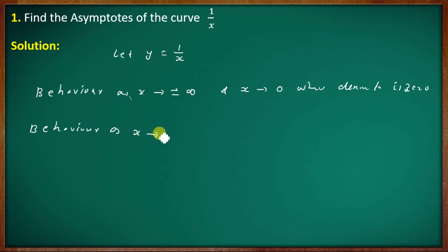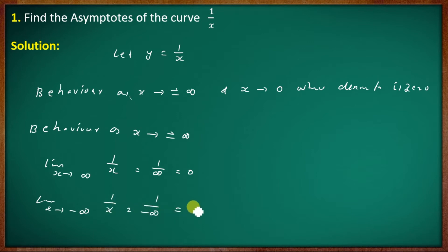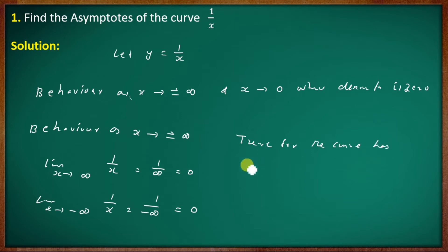As x tends to plus or minus infinity: the limit as x tends to infinity of 1 by x is 1 by infinity, which equals 0. The limit as x tends to minus infinity of 1 by x is 1 by minus infinity, which also equals 0. Therefore, the curve has a horizontal asymptote.